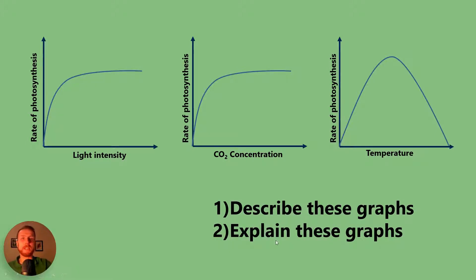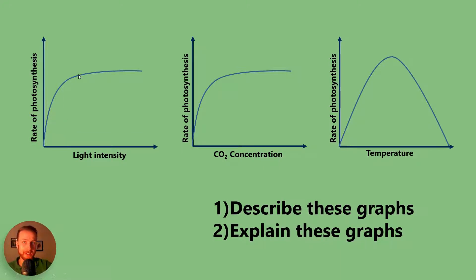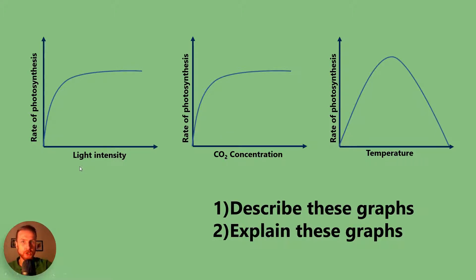When describing these graphs, for light intensity a good description would be: there's an initial proportional increase as light intensity increases, followed by a slowing of the rate of increase and then a plateau. To explain this, we'd say light is no longer the limiting factor when it plateaus. When it was increasing, more light led to more photoionisation, which led to more ATP, more NADPH, more Calvin cycle turns, and therefore more glucose and carbon dioxide use.